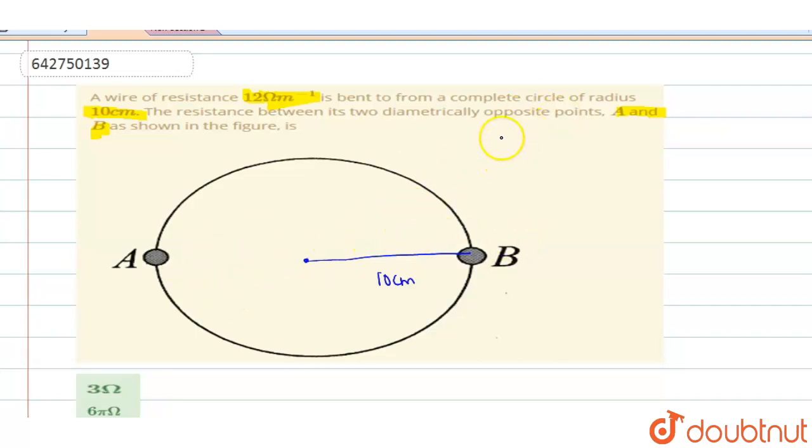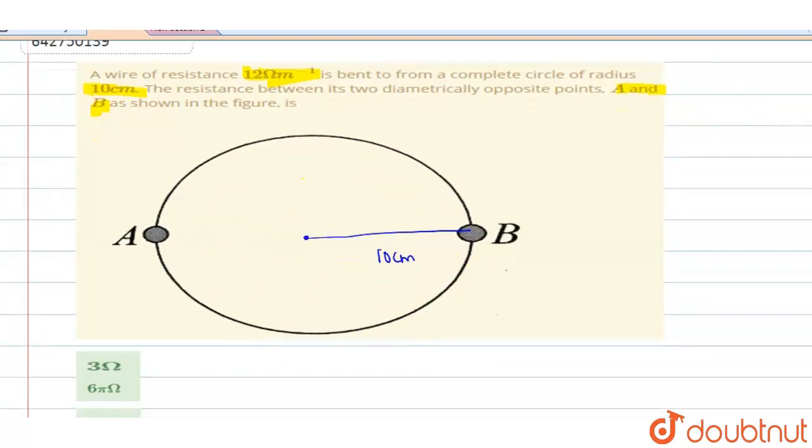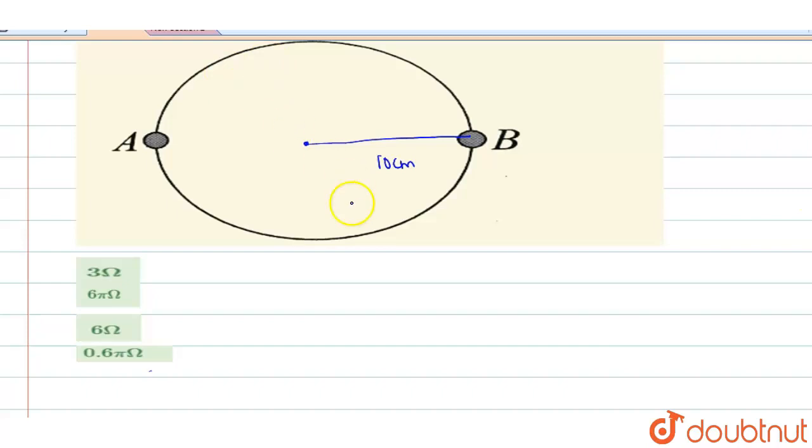Now you first calculate the total resistance of this wire because a wire has a resistance 12 ohm per metre they are telling. Now you have a total length of this wire. What will be the total length of the wire we shall calculate and we calculate the total resistance acting on that wire. So total length of the wire is how much now?